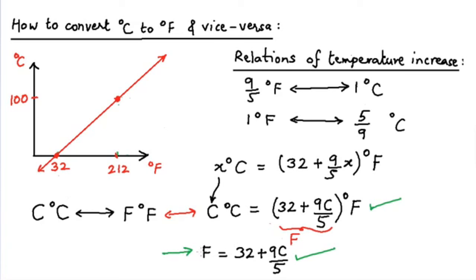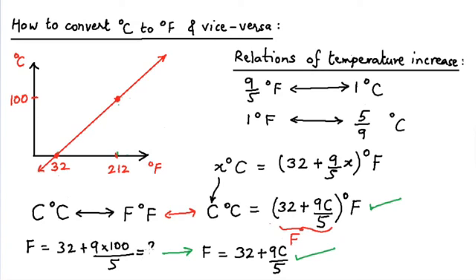For example, if C equals 100, F equals 32 plus (9/5)×100, which upon calculation yields 212. That means when C is 100, F is 212, which we know to be correct. So we have verified the correctness of this equation in at least one case.